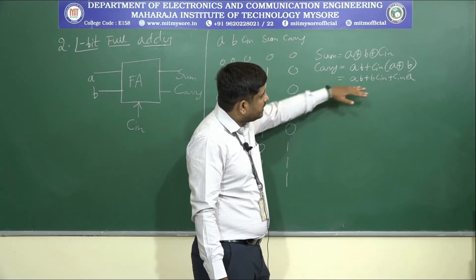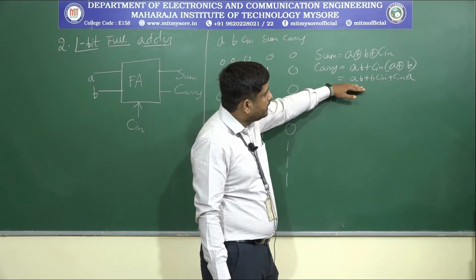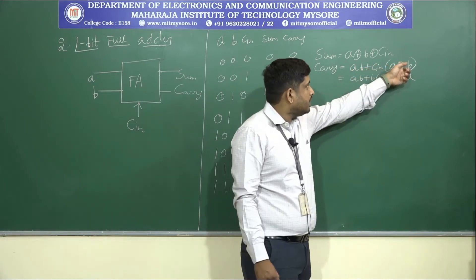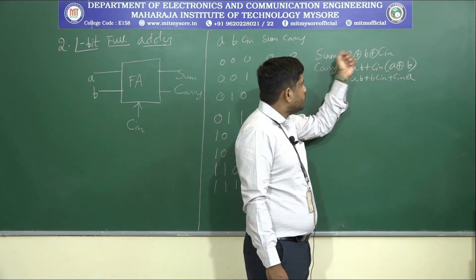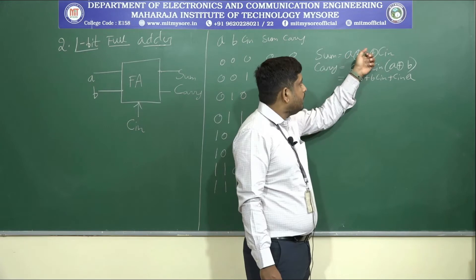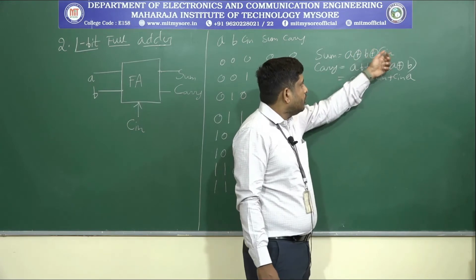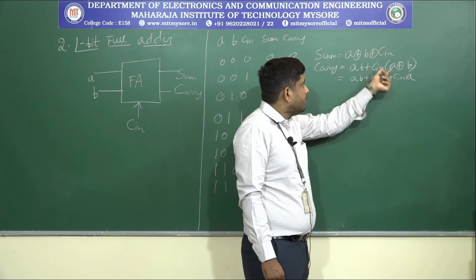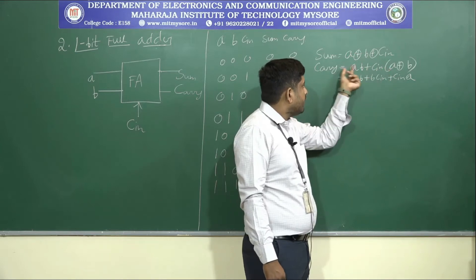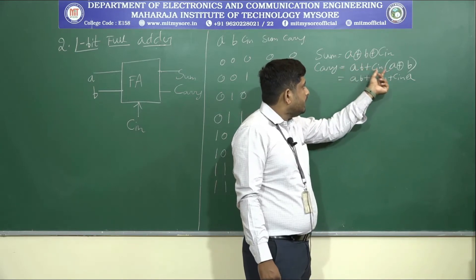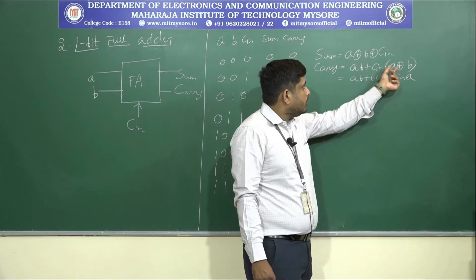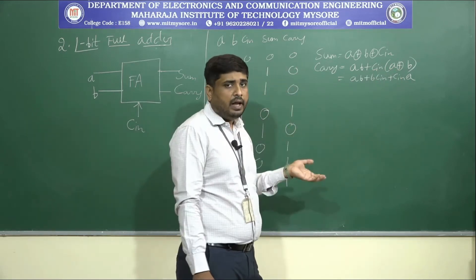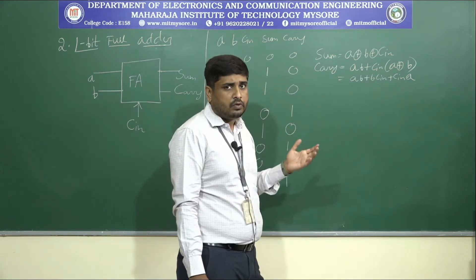That's why we further reduce the carry equation to: Carry = AB + C_in(A XOR B). Notice that the term (A XOR B) already appears in the sum equation, so we can reuse that gate in the carry equation as well, reducing the total gate count.